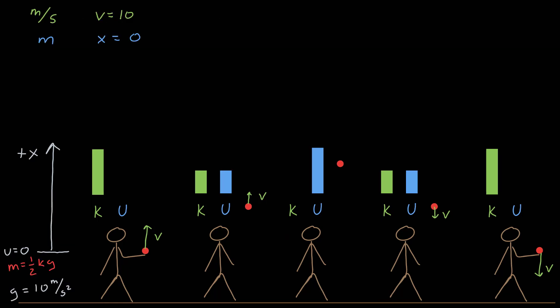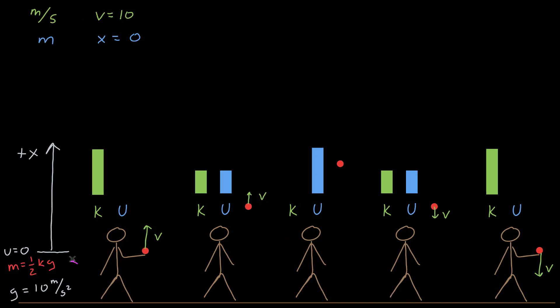Let's put in some numbers. So I've said that the mass is a half a kilogram, and the acceleration due to gravity is 10 meters per second squared, so I can do some of the calculations in my head. At this first instant of time, given our coordinate system, the position is zero, and I'm going to say the speed is 10 meters per second.